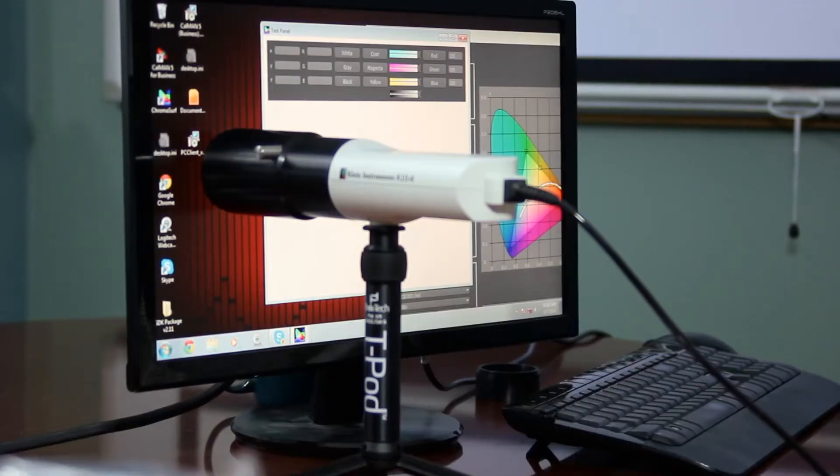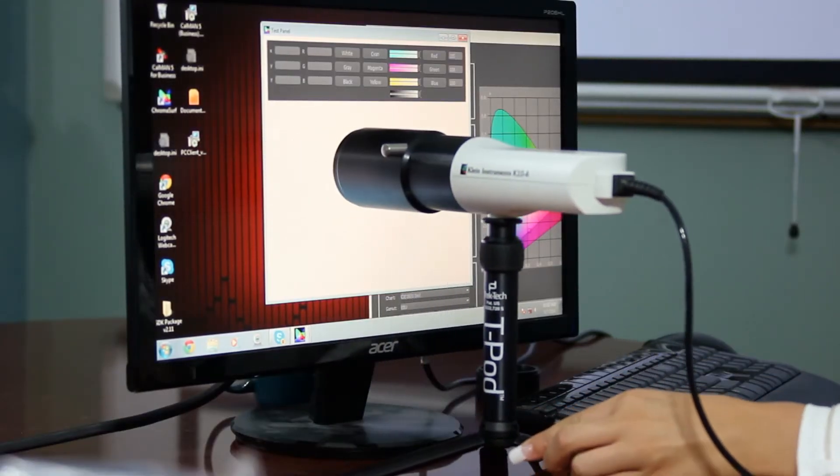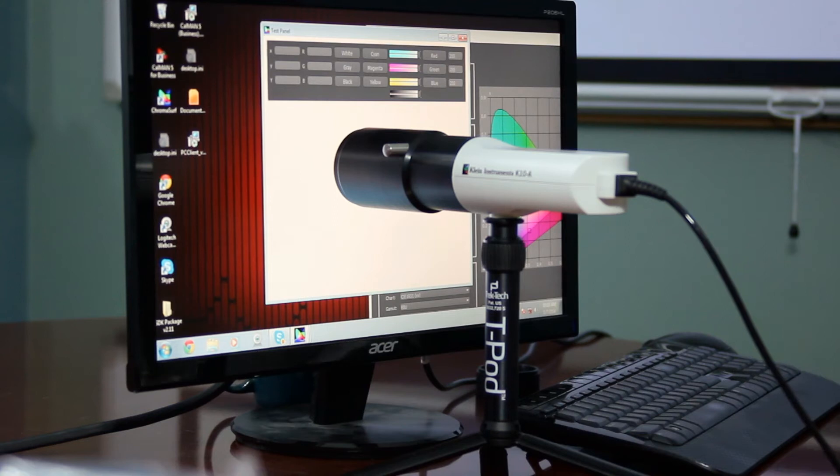Let's start with the K10A, our best-selling colorimeter, and measure a desktop monitor. You generally want to position your K10A near the center of the screen because the intensity tends to fall off near the edges.